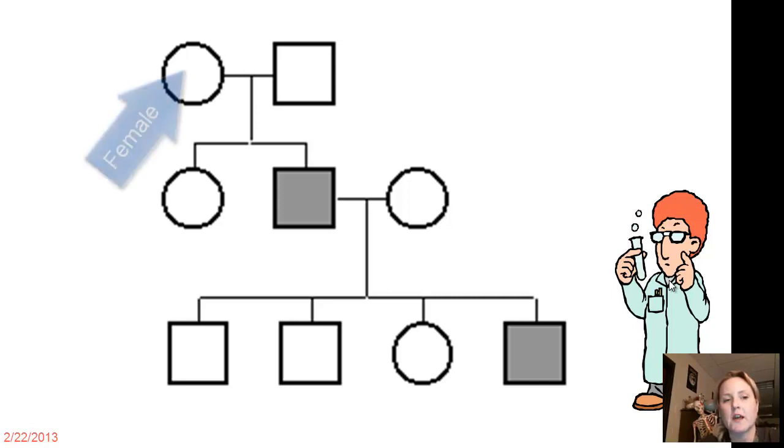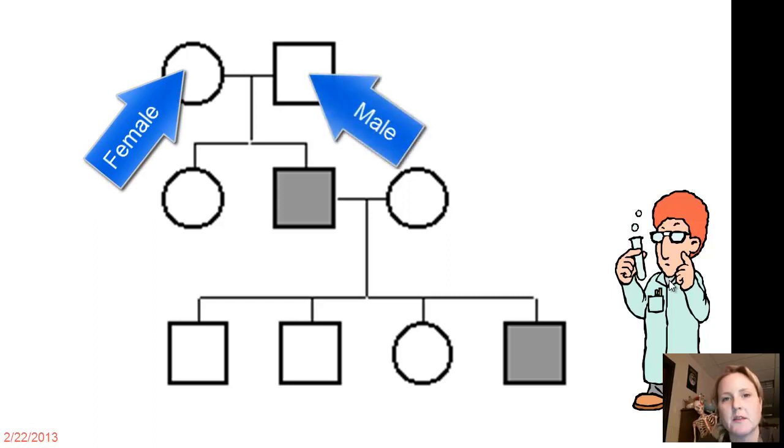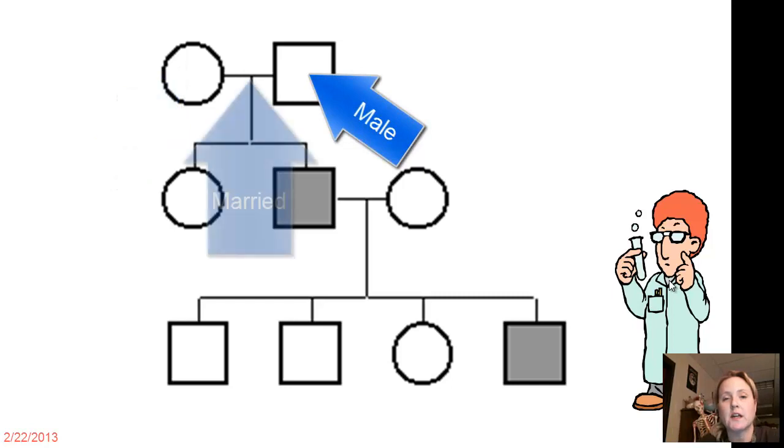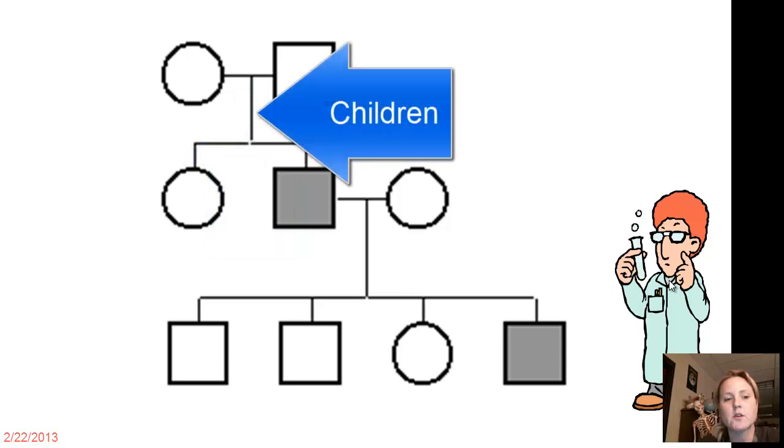The first generation, we have a female represented by the circle and a square represented by the male. Those two have gotten married, that's what the line connecting them represents. And then the vertical line coming down represents their children. So these two grandparents, they got married and they had two children.